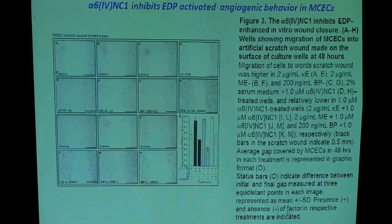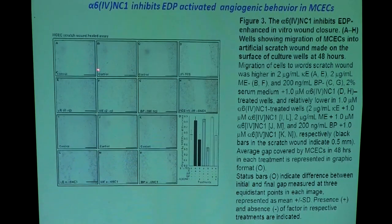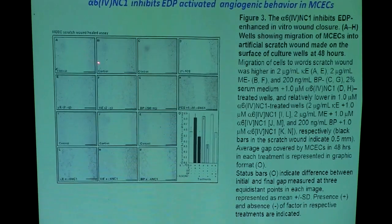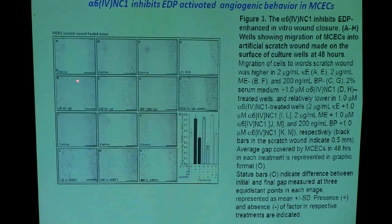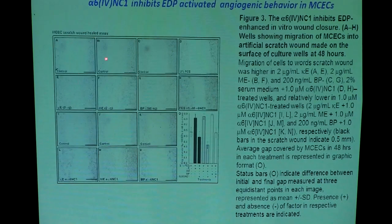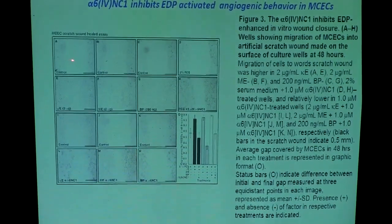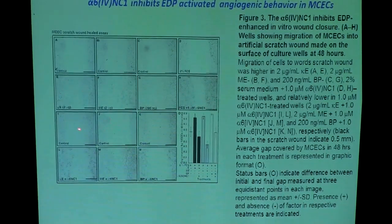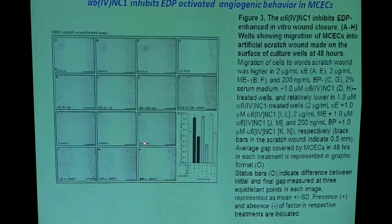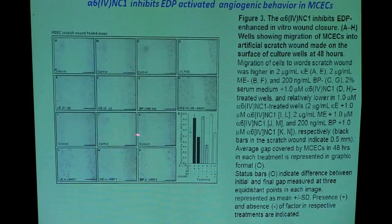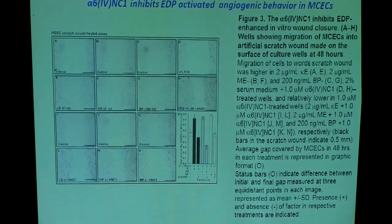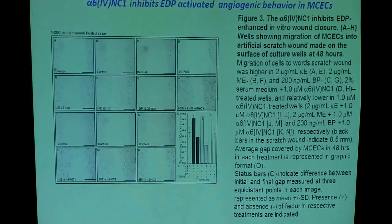We also performed the scratch wound assay. When cells reached 80% confluence, a sterile tip was used to make an artificial wound. Controls were set. When kappa-elastin was used, within 48 hours the artificial wound was healed — cells migrated and filled the gap. When our molecule was used, the gaps were not filled; it inhibited transmigration of the cells into the artificial wound, confirming inhibition of both migration and proliferation.